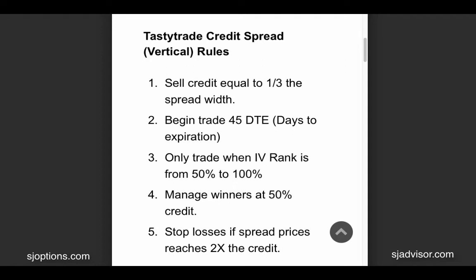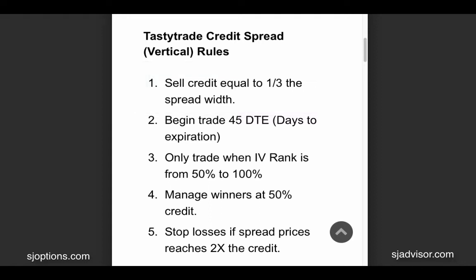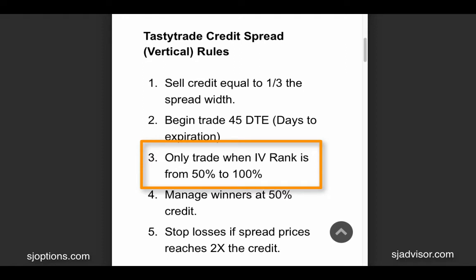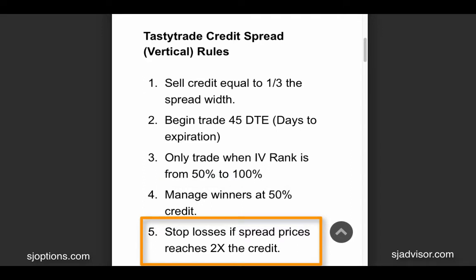So in front of you, you have the rules of the credit spread that we're going to be testing today. We're going to be collecting a credit of approximately one-third of the spread width. For example, in this actual test, we did a 10-point wide spread, so the credits were somewhere around $3.30. We're beginning the trade at 45 days to expiration. We're only going to initiate this credit spread when the IV rank is from 50% to 100%. We're going to manage the winners at 50%, meaning we're going to close them out once they reach 50% in profit — that's 50% of the credit brought in. And we're going to stop the losses if the price of that spread doubles. For example, if the price starts at $3.30 and it reaches $6.60, then we'll close out that trade.